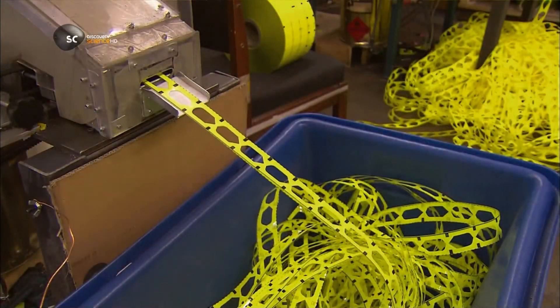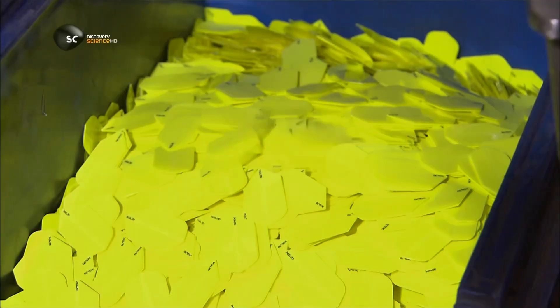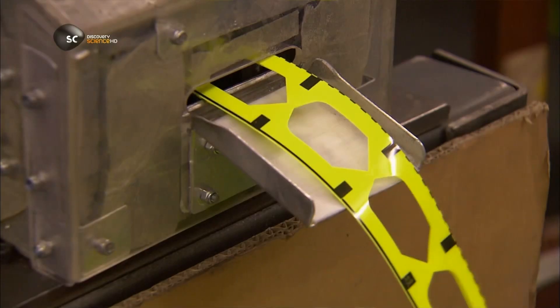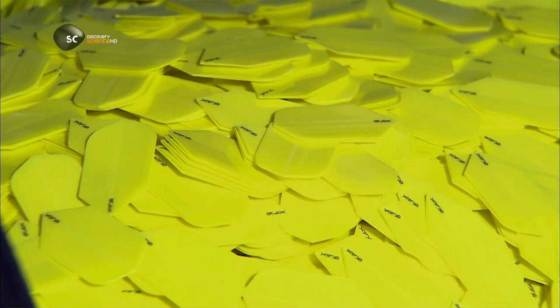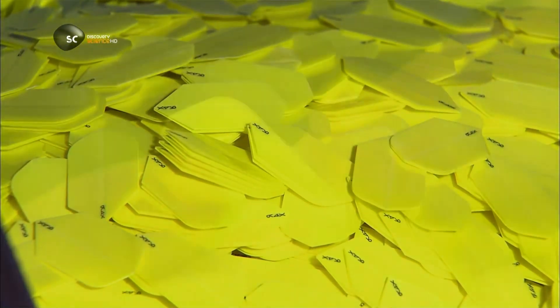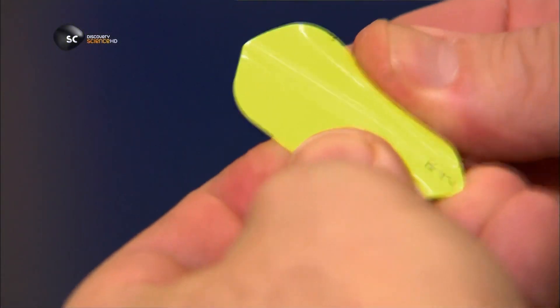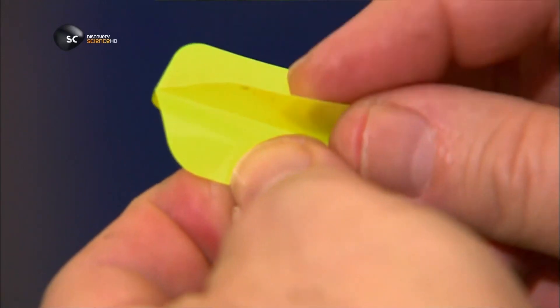A machine cuts out the flight shapes, and they accumulate in big piles. Flights are made in various shapes. This is just one. They fold the cutouts together to make a flight. They check each one for symmetry.